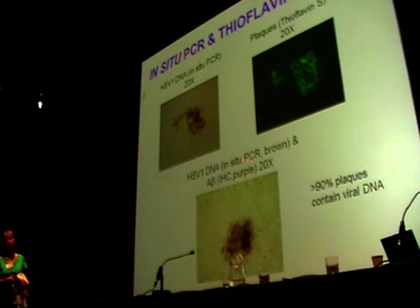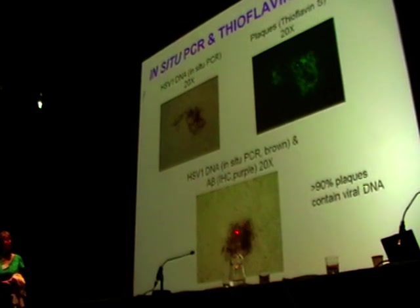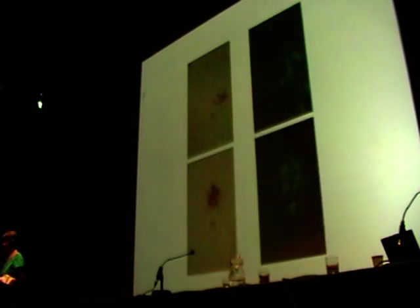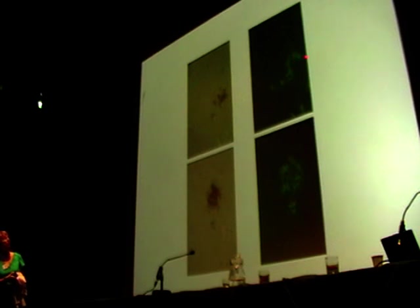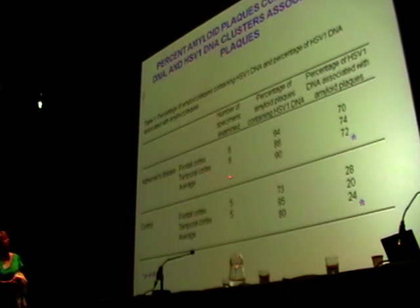This is another section of another brain, done again by in situ PCR for the DNA, and immunohistochemistry showing purple staining for beta-amyloid. You can see areas within the brown viral DNA environment of beta-amyloid staining. There is very nice co-localization. What we found was, in the case of Alzheimer's brains, about 90% of plaques on average contained viral DNA, and about 72% of the viral DNA was associated with plaques.